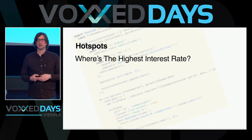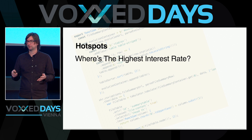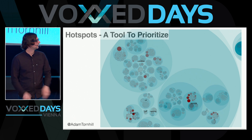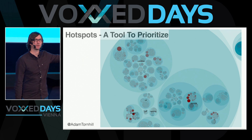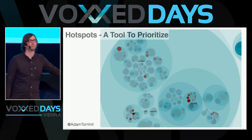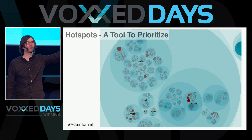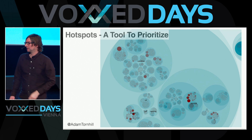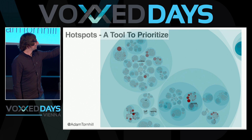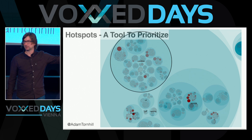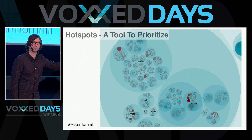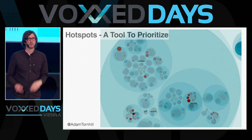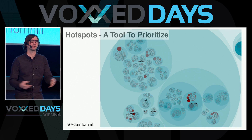Let's embrace version control data as our crystal ball and see where it takes us. Let's start by uncovering the code with the highest interest rate. The technique I use for this is something I call hotspots. I'm going to walk you through this visualization — a hotspot analysis of a well-known, mature Java codebase: Tomcat. Each large circle represents a folder in that codebase. This is a hierarchical, interactive visualization that follows the folder structure of your code, allowing you to zoom in to any level of detail.